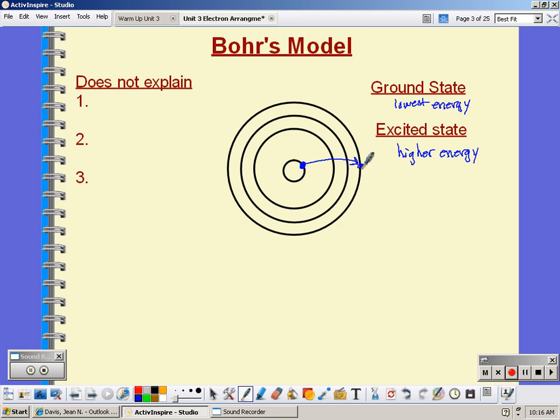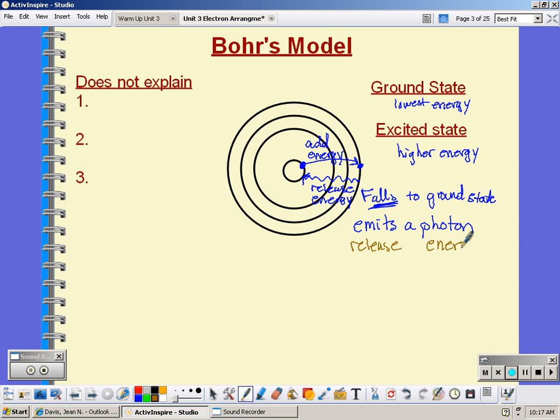So when you add energy, the electron becomes excited and goes up. Once it's excited, eventually it's going to crash back down. So it's going to release energy. And when it releases energy, it falls to the ground state, or lower energy. When it falls, it emits a photon. Now the word emit means to release, and the word photon refers to energy. So when the electron falls, it releases energy.